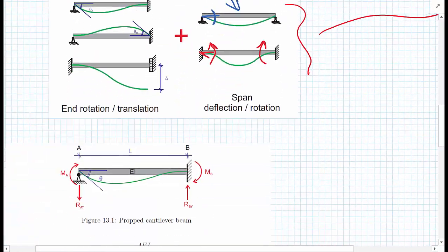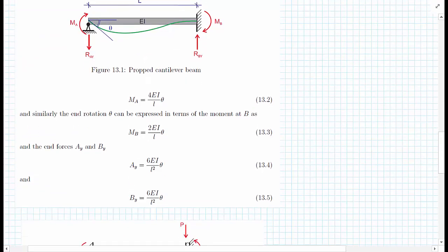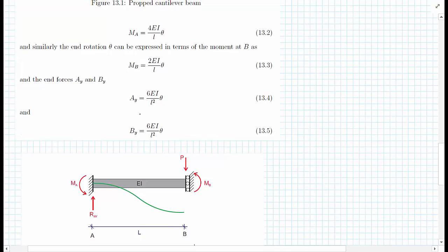Using the unit load method, we release the moment constraint and apply a rotation θ. The moment at the left-hand side is MA = 4EI/L multiplied by θ. The moment the rotation causes at the right-hand side is MB = 2EI/L multiplied by θ — half of MA. This rotation also causes shear forces: 6EI/L² multiplied by θ at both the left-hand and right-hand sides.